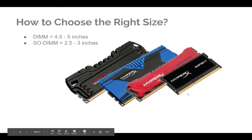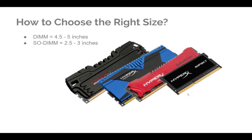So how do you choose the right size? There are a lot of different sizes of RAM. For a desktop computer, you'll use DIMM RAM — about 4.5 to 5 inches long — and you'll want to check your motherboard specs before purchasing. For laptops, you'll use SODIMM, which is about 2.5 to 3 inches long and found in almost every laptop on the market.